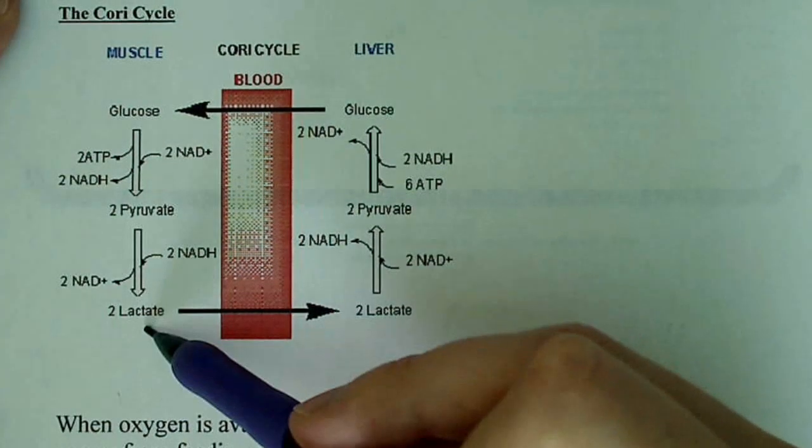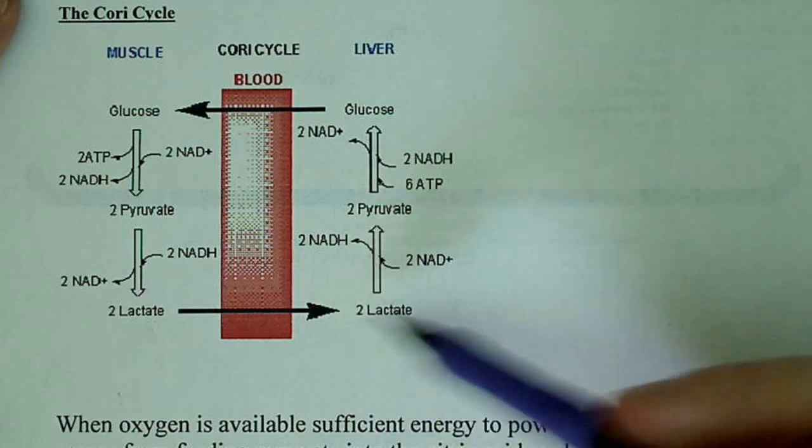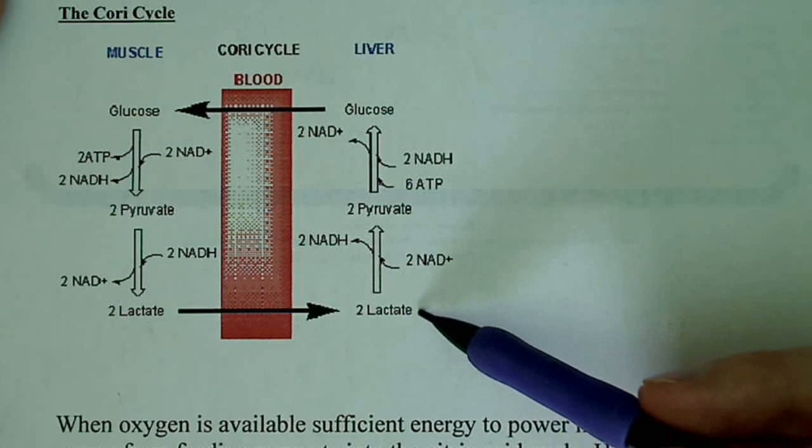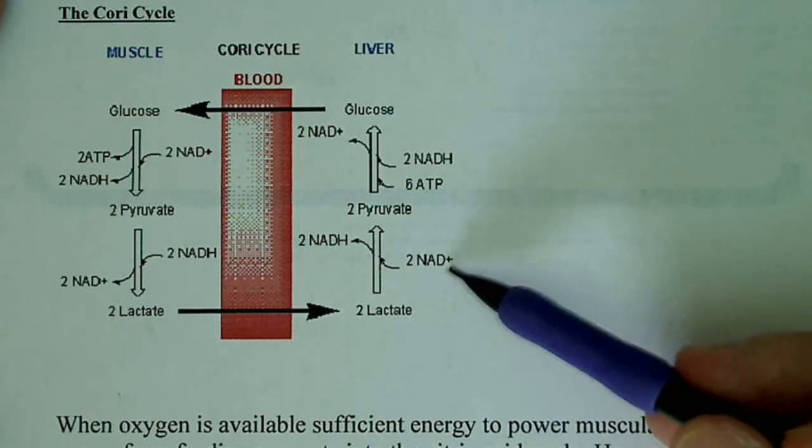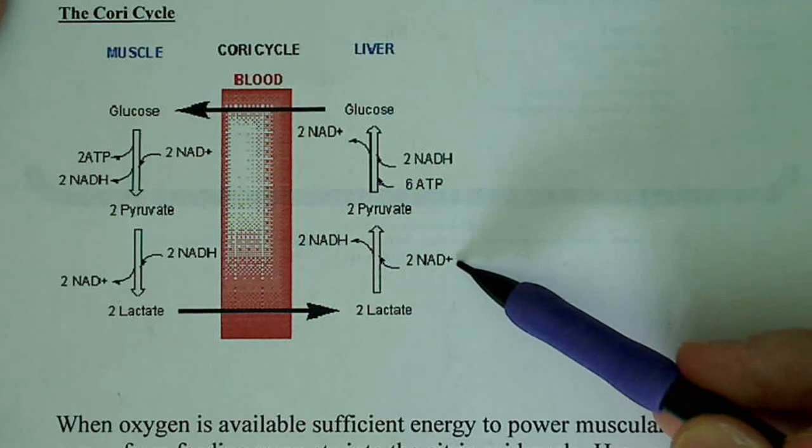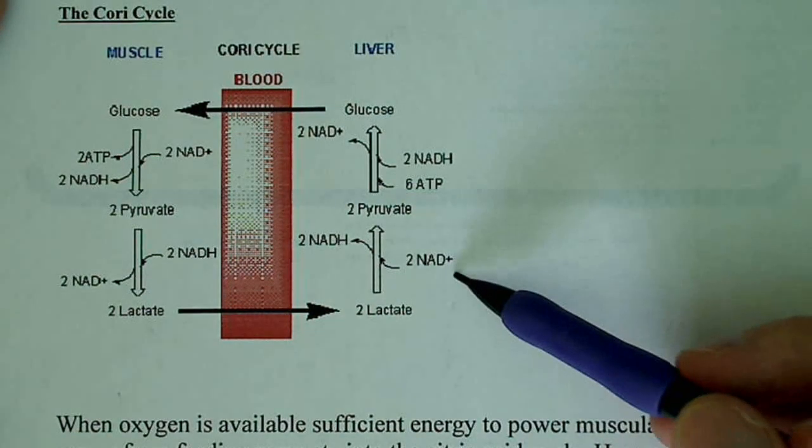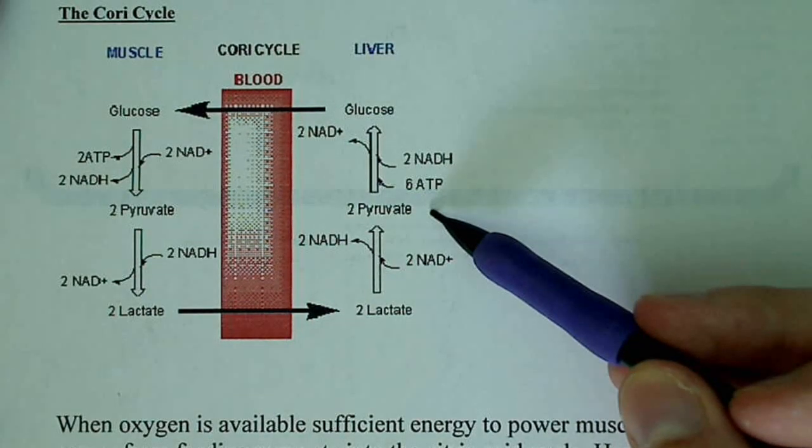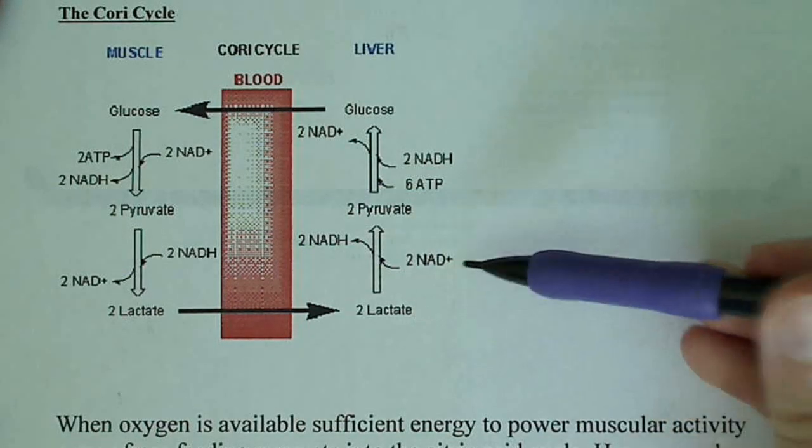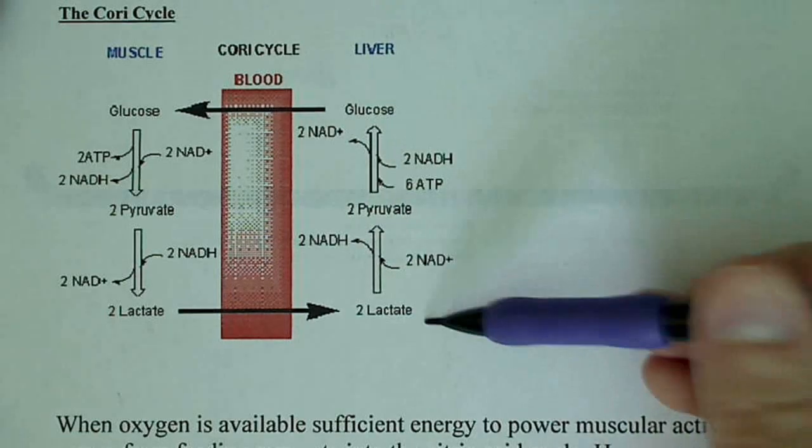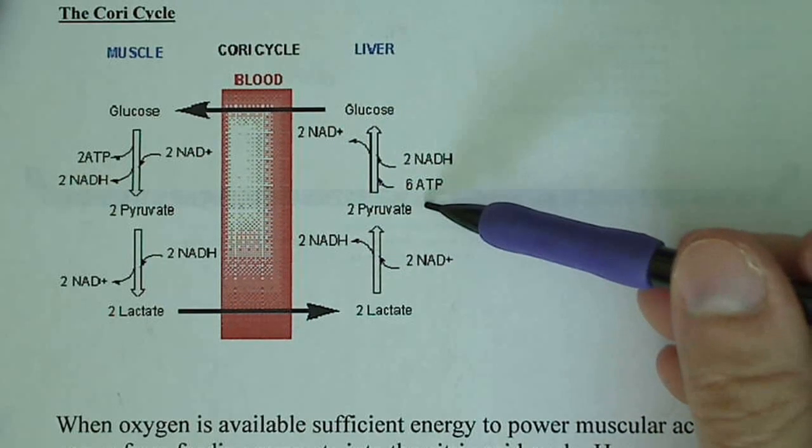But again, this is a dead end, so what do you do with it? Well, you transport it in the blood to the liver. And by transporting it to the liver, the liver can go through a process where it takes the two lactates. Notice again, it requires NAD+ and makes two NADH. So this is reduced, and then lactate is oxidized to make two pyruvates. So this is getting reduced, gaining electrons, and this is getting oxidized, losing electrons.